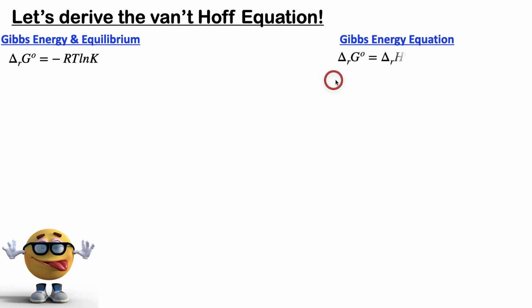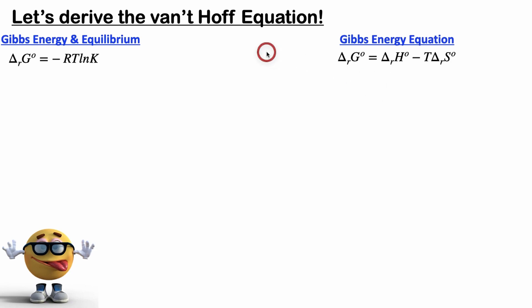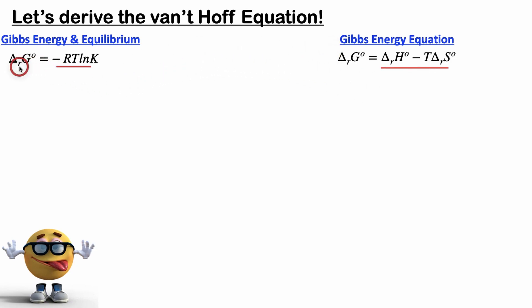Our other equation is the Gibbs energy equation: ΔG equals ΔH minus T·ΔS. If you compare these two equations, you'll notice that the right-hand sides both equal ΔG, so they have to be equal to each other.